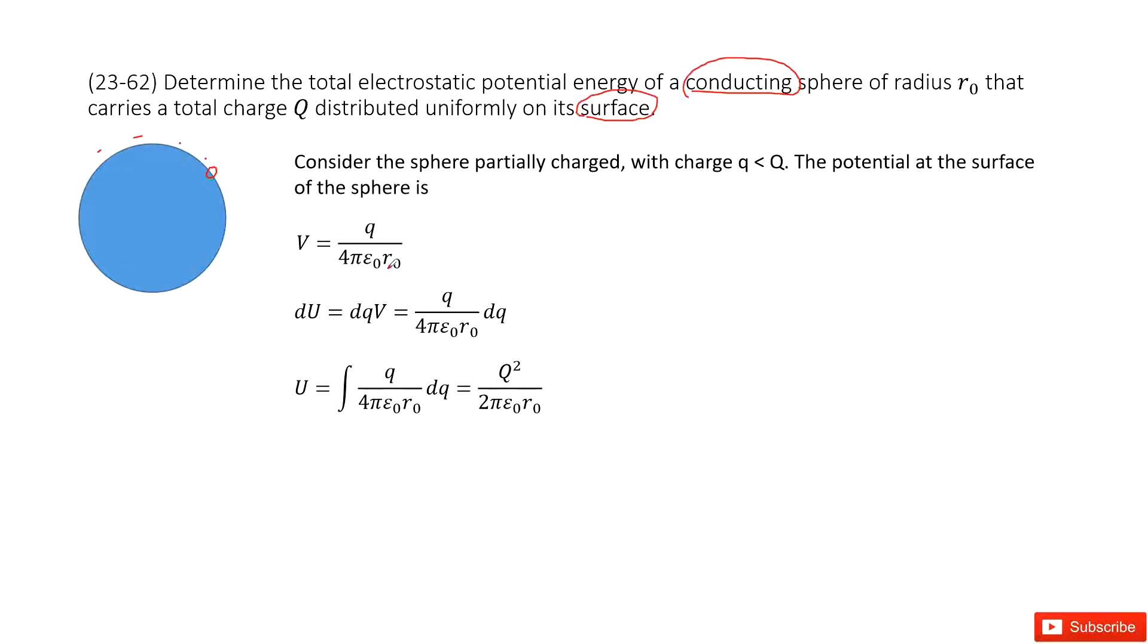And then we can see the electric potential energy dU can be written as the charge times the V. This is the potential. So it is Q divided by 4πε₀r₀ times dQ.